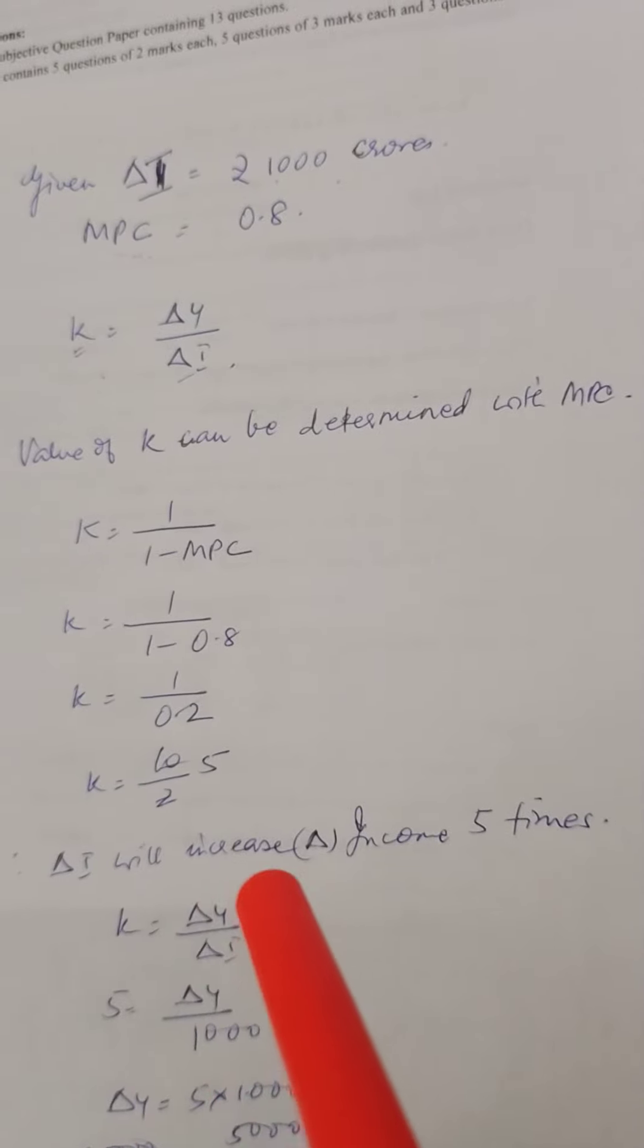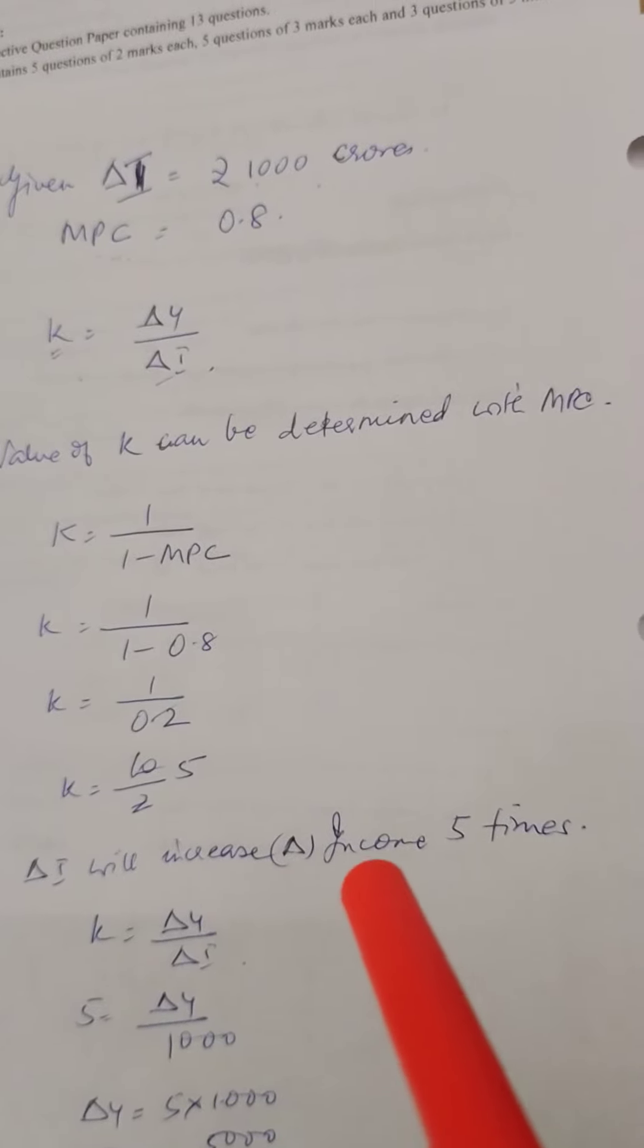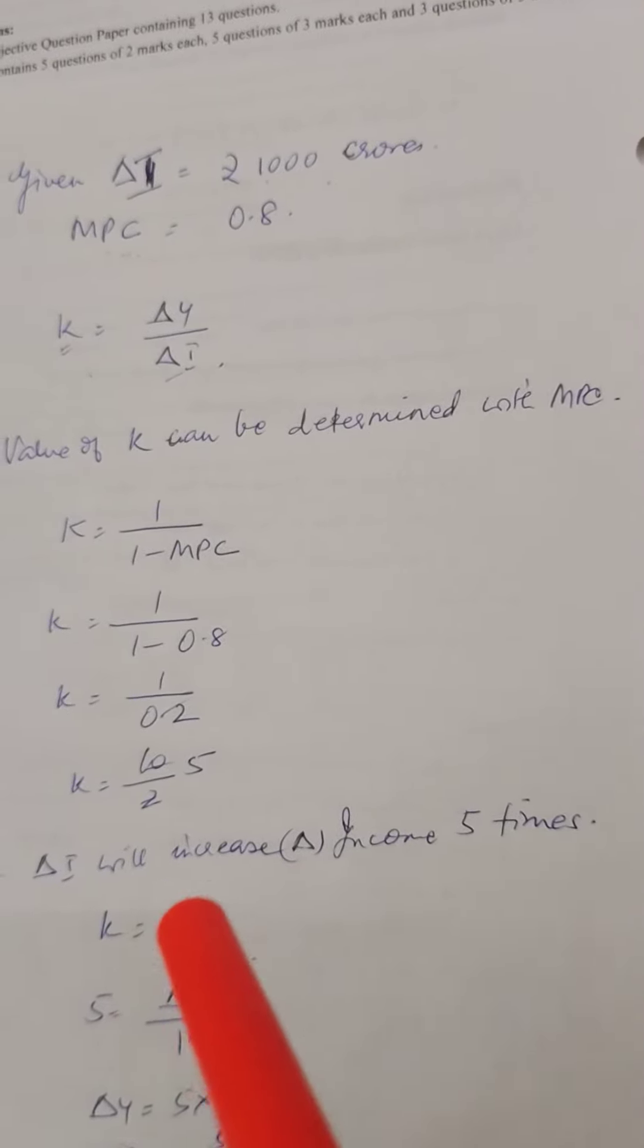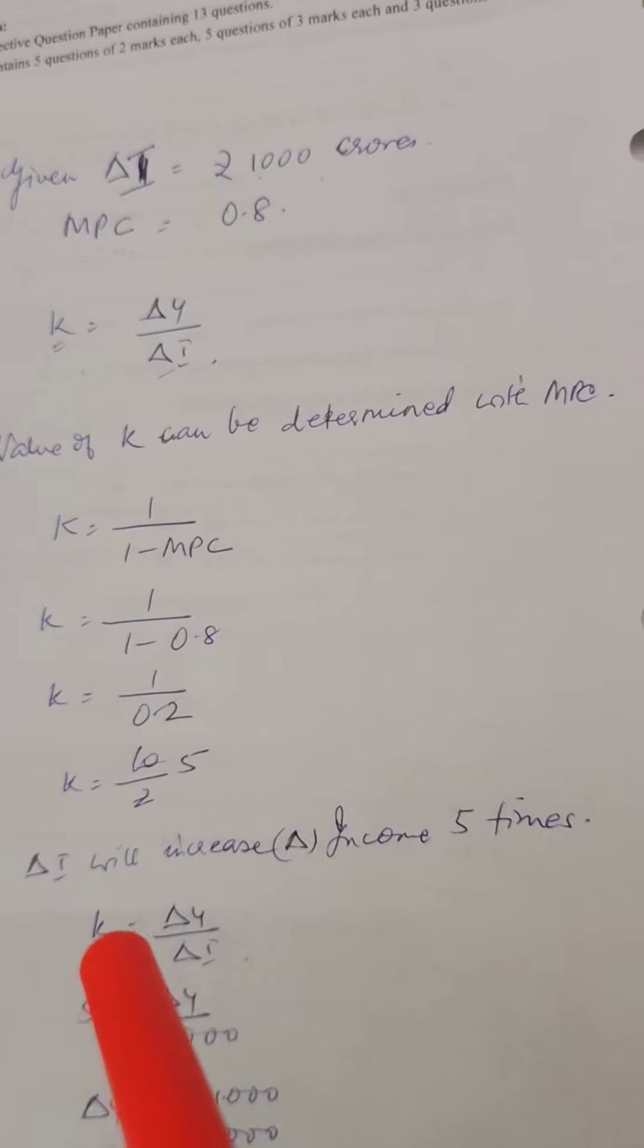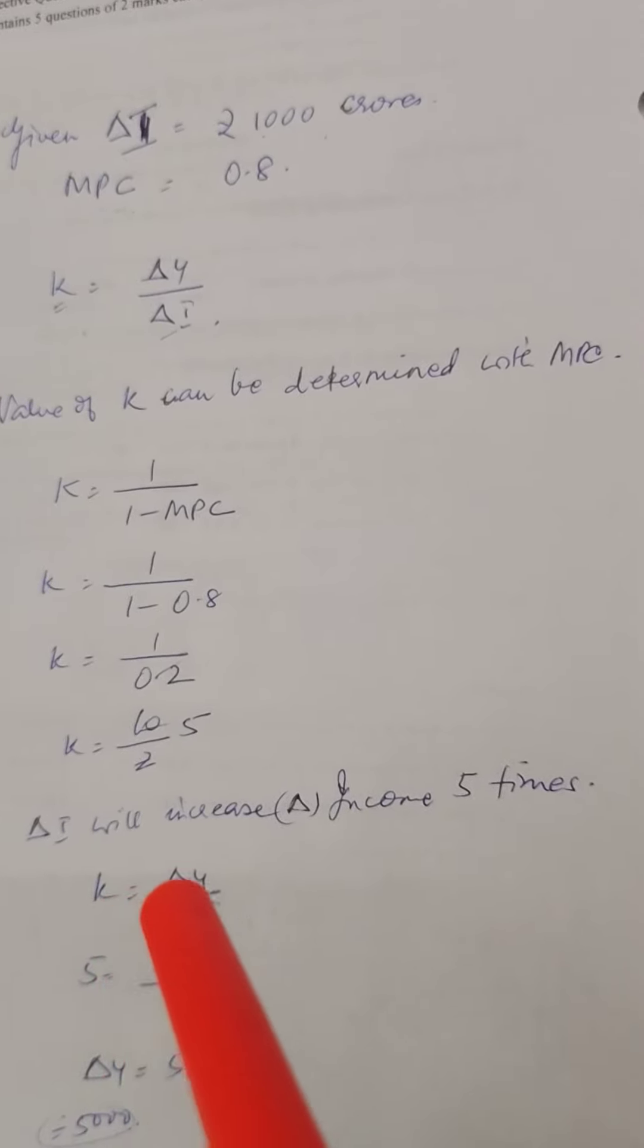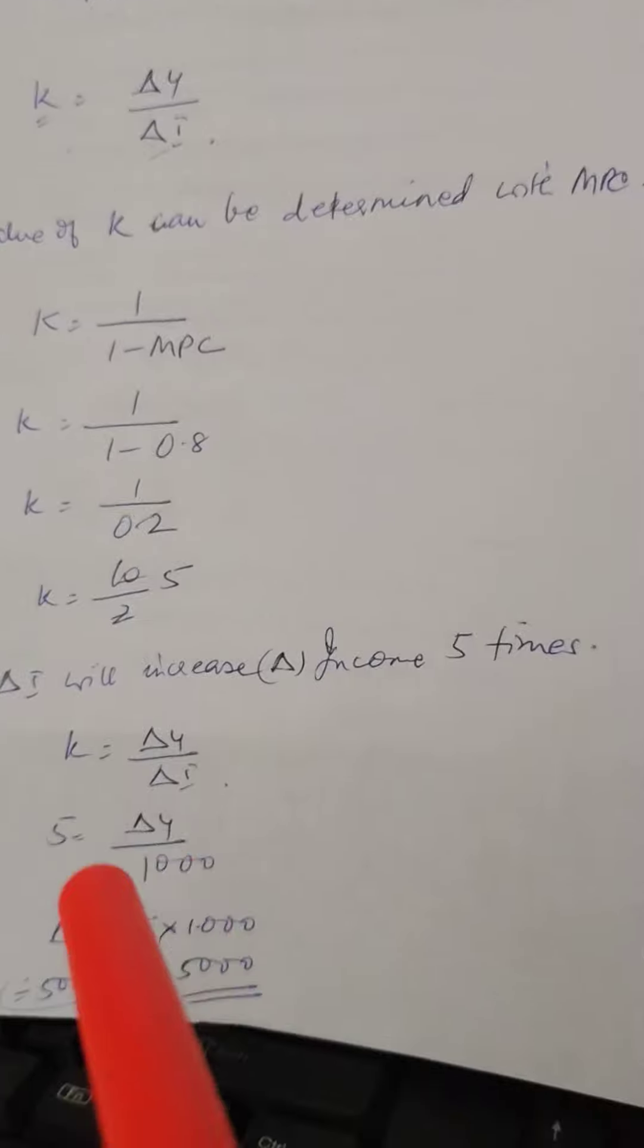Therefore, change in I will bring about change in income 5 times. K = change in Y upon change in I. We found that multiplier is 5. So 5 = change in Y upon 1,000.